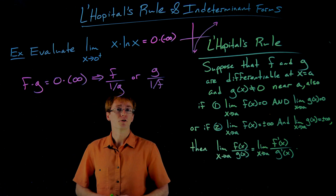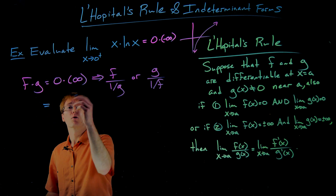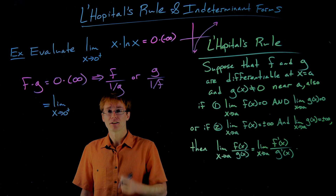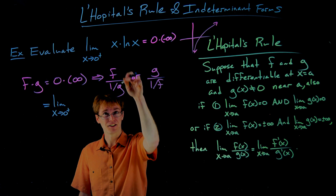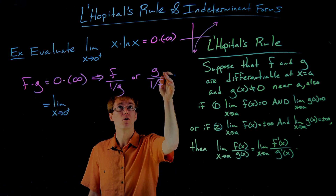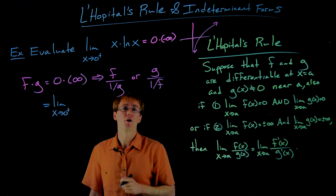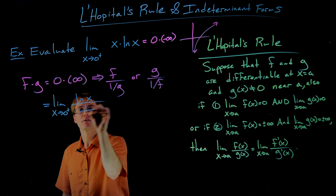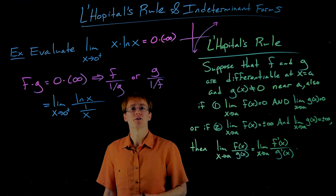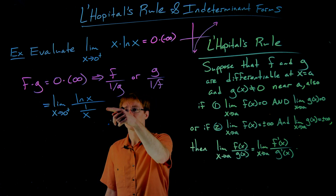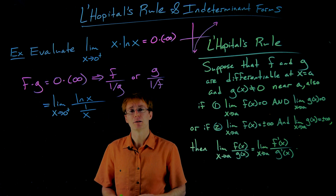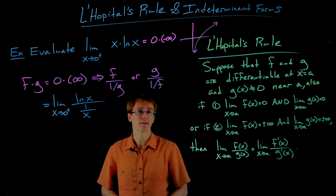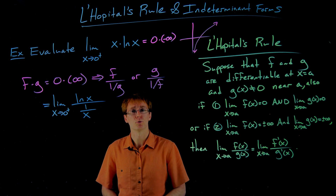Going back to our original limit, instead of x times the natural log of x, we rewrite this as either x divided by (1 over ln x) or ln(x) divided by (1/x). We're going to try the second option — ln(x) divided by (1/x) — mainly because these pieces are easier to differentiate individually. Differentiating 1 over ln(x) is harder than differentiating 1/x. But before any differentiation, we first have to verify that L'Hôpital's rule now applies.